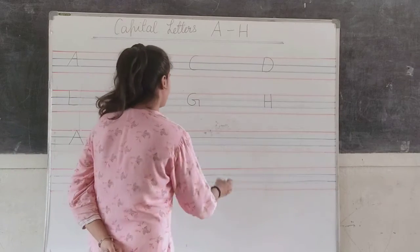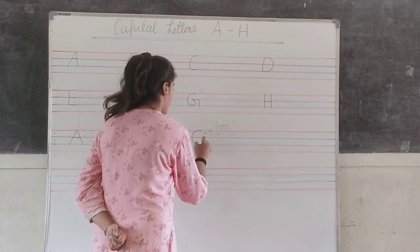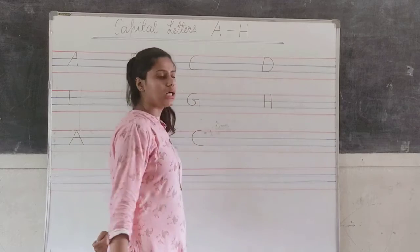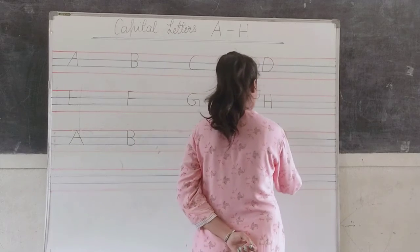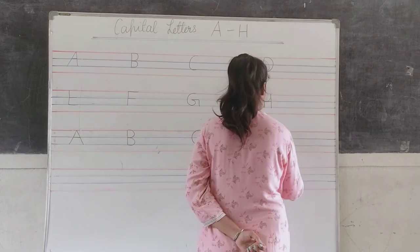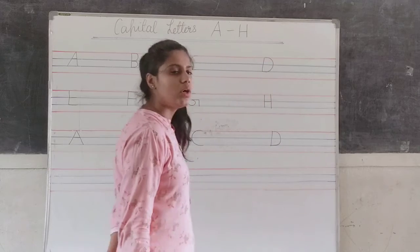C for cat: one curve. D for dog: one standing line and one curve.